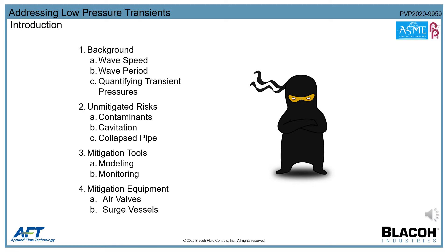When it comes to formal education, surge or transient pressure waves is still very much a specialized topic. Ironically, transient pressure waves exist in all fluid piping systems. They behave much like a team of covert ninjas — moving so fast and often so strongly, it's hard to know they are there until something breaks.